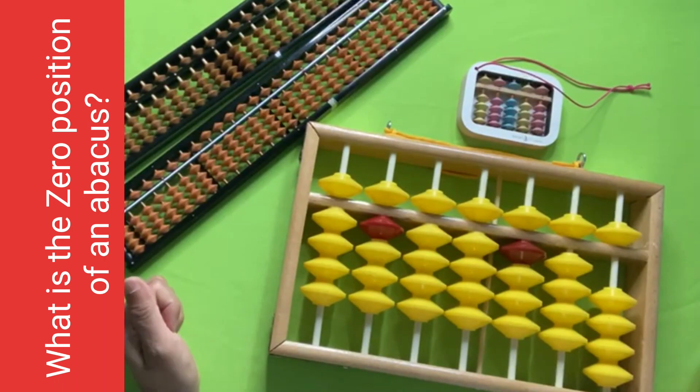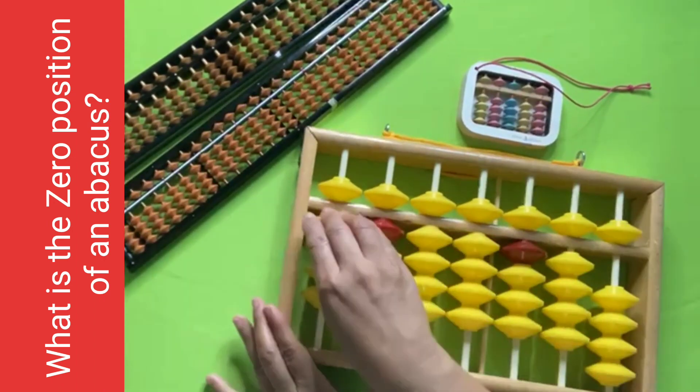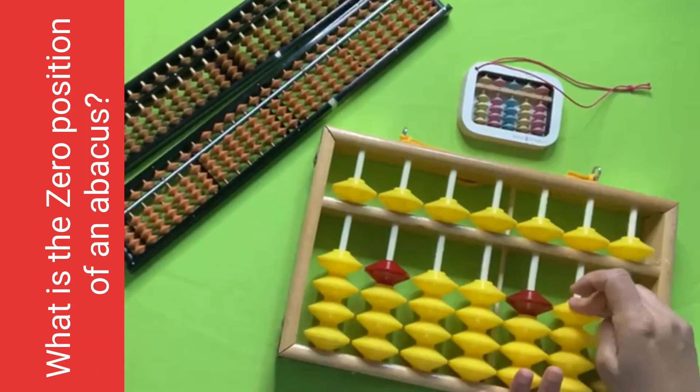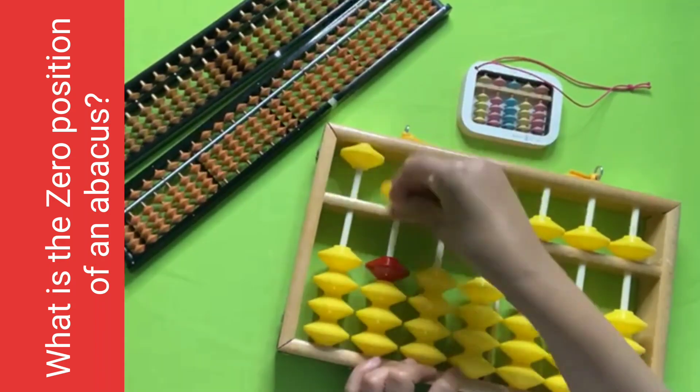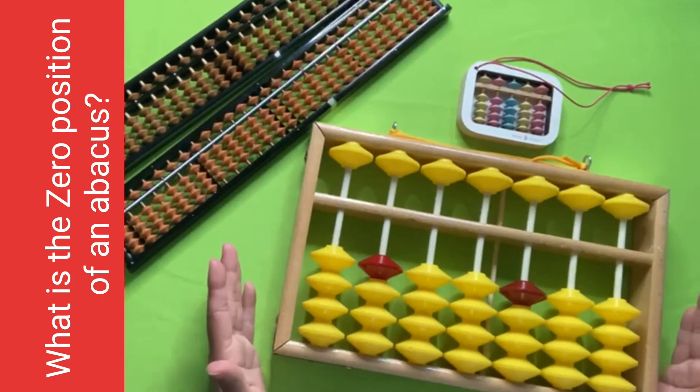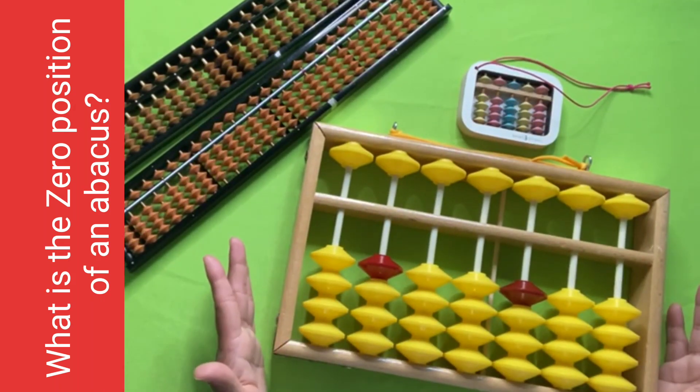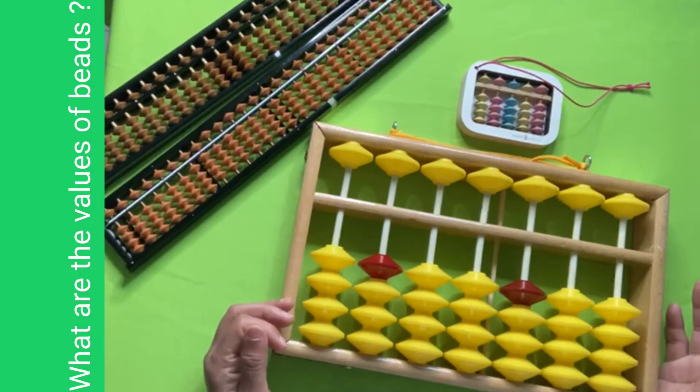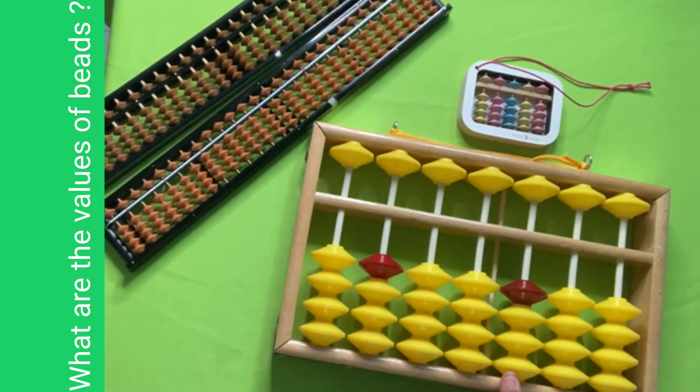What is the zero position of an abacus? All down bits are on the downside and all up bits are on the upside. This is the zero position of an abacus.